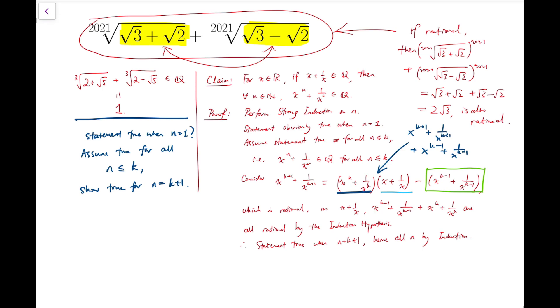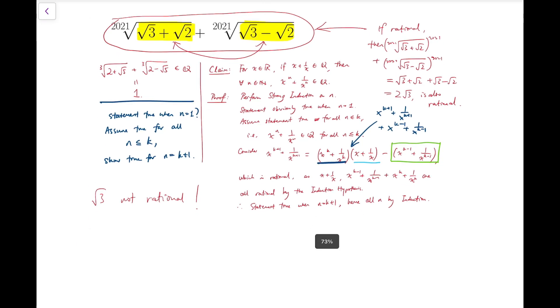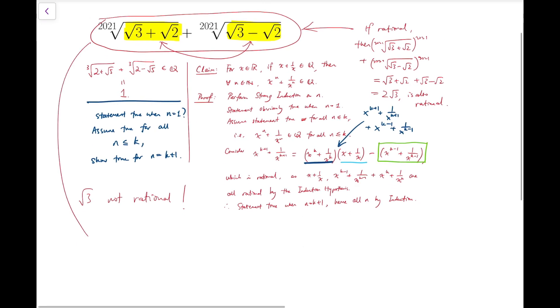But this is clearly not true because we know that root 3 is obviously not rational. So we'll finish the proof that the number that we're addressing is irrational.